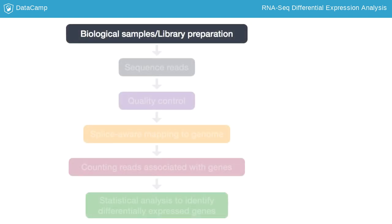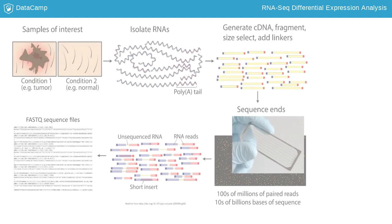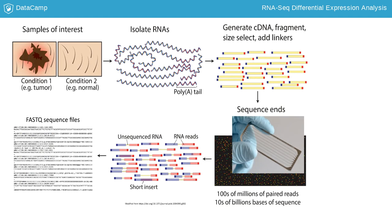After you have a well-planned experiment, you can begin with sample preparation. When preparing RNA-Seq libraries, the samples are harvested, the RNA is isolated, and DNA contamination is removed. The rRNA is removed, or mature mRNAs are selected by their polyA tails. Then the RNA is turned into cDNA, fragmented, size-selected, and adapters are added to generate the RNA-Seq libraries to be sequenced.